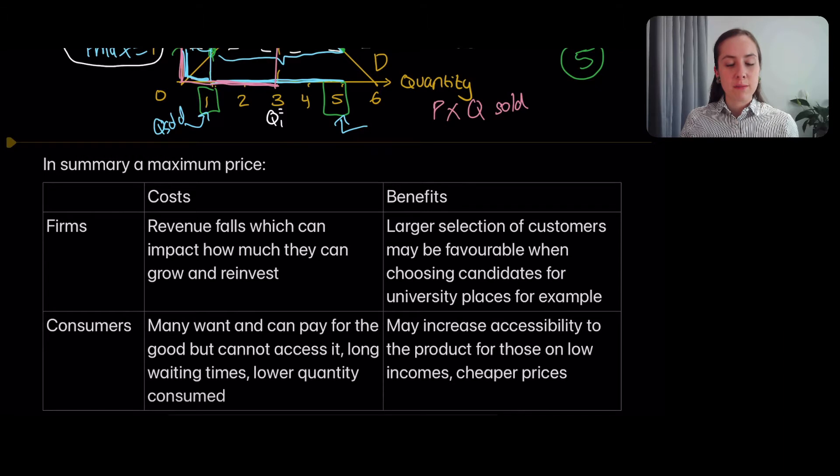Okay, but let's see what happens with consumers. So consumers, we've talked about how there's more people wanting the good than can actually buy it. We talked about how there's five people wanting the good, but only one person being able to buy it. So in that case, a lot of people are disappointed. They try to apply and they can't find this good. So there might be long waiting times, there could be lots of rejections. And ultimately, a maximum price, and this is really important to remember, leads to less quantity being sold.